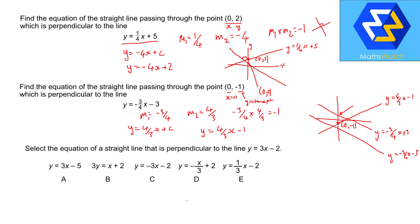Perfect. Select the equation of a straight line that is perpendicular. Well, you know m equals 3 here, that's m1. So m2 must equal minus 1 over 3. And that's the only thing you need to look at. So it's this one. Okay, perfect.